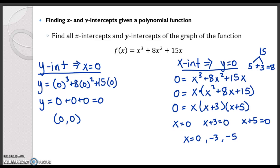So my x-intercepts are at the point (0, 0), which makes sense because I had a y-intercept of (0, 0), negative 3, 0, and then negative 5, 0. So there's one example of finding x and y-intercepts.